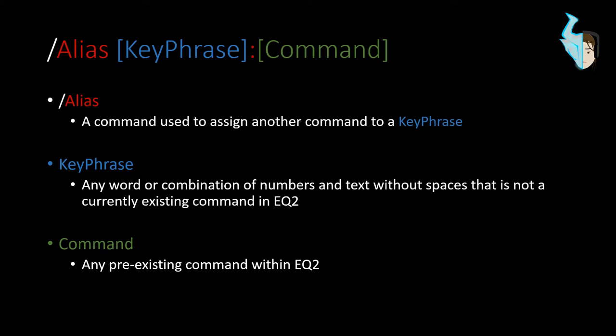For ease of viewing — and I apologize to anyone who might be colorblind — if you want me to redo this in grayscale, let me know and I could do that. The alias command parts will be in red, any key phrases will be in blue, and any commands at the tail end will be in green.